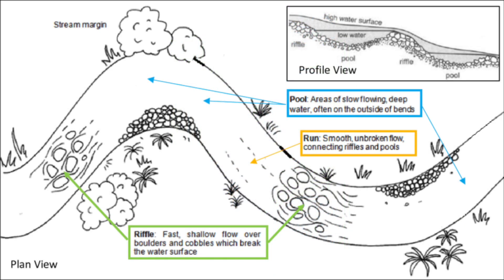In addition to food resources, the physical anatomy of the stream can affect community diversity. In this diagram, you can see there are three different types of habitat within the stream. Riffles are shallow areas where water flows quickly over boulders and cobbles that break the water surface. Pools are areas of really slow-flowing water that's often deep and usually found on the outside bends of the river. Runs are areas of smooth, fast-moving water that can usually connect riffles and pools. Because the benthic substrates differ in each habitat, each habitat can support different species.